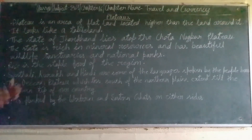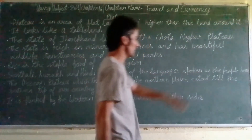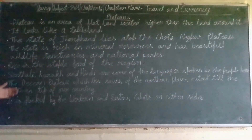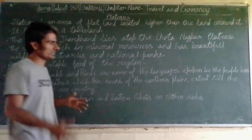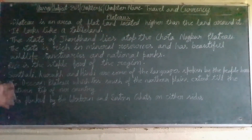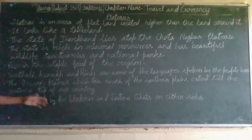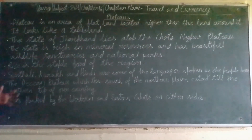The Deccan Plateau, which lies south of the northern plains, extends to the southern tip of our country. It extends from the northern plains to the southernmost tip of our country. It is flanked by the Western and Eastern Ghats on either side.